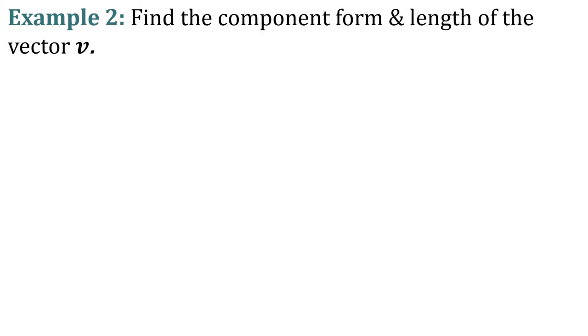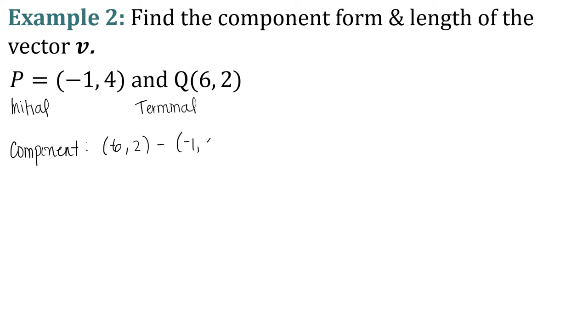Example 2, we're going to find the component form and the length of the vector. So here we have P is (-1, 4) and Q is (6, 2). So we know that P is the initial and Q is the terminal. Therefore, our component form is going to be terminal minus initial. So 6, 2 minus negative 1, 4. So our vector is going to be 7, 6 minus a negative 1 is 7, 2 minus 4 is a negative 2. So there is our component form.